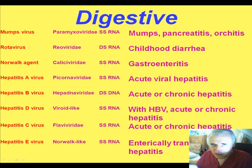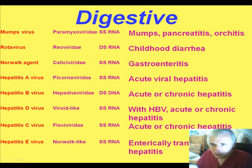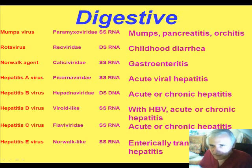Moving to digestive viruses — mumps, technically paramyxoviridae and a single-stranded RNA virus, causes parotitis (a digestive gland infection), as well as pancreatitis and orchitis. Rotavirus is probably the number one cause of viral diarrhea. The Norwalk agent causes another form of gastroenteritis. Then we have the whole family of hepatitis viruses, which certainly apply to the digestive system as well.